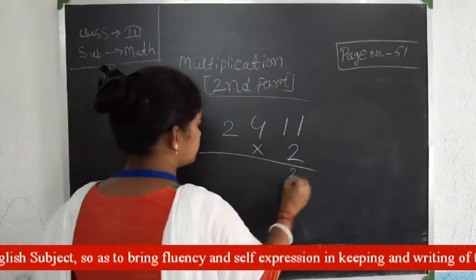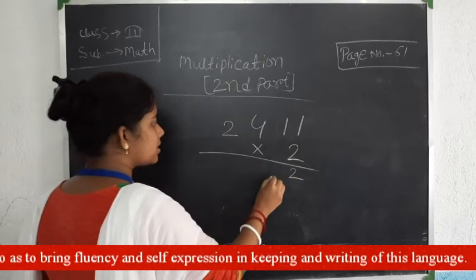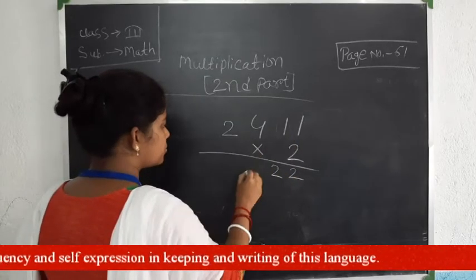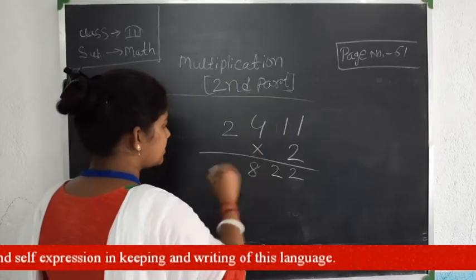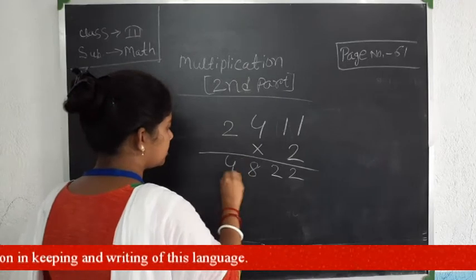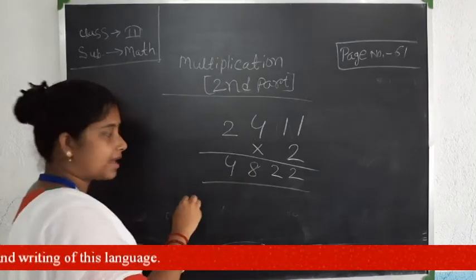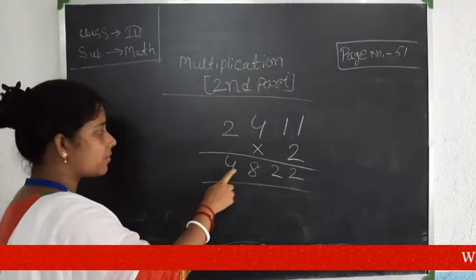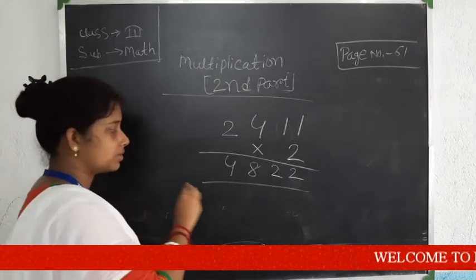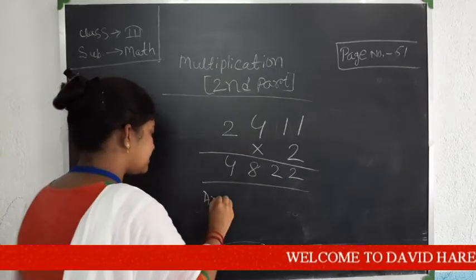2 ones are 2. Again, 2 ones are 2. Then 4 twos are 8, and 2 twos are 4. So the answer is 4, 8, 2, 2. This is the final answer.